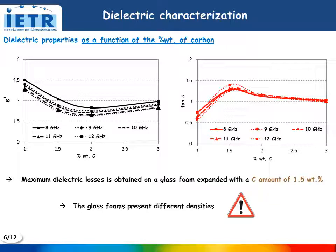Here I present the dielectric properties of the samples as a function of the weight percentage of carbon. We can observe that the permittivity decreases as a function of the carbon content and increases for the higher percentages, and inversely for the dielectric losses. Maximum dielectric losses are obtained for the glass foam made with 1.5% of carbon.